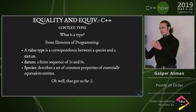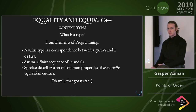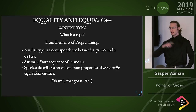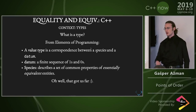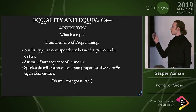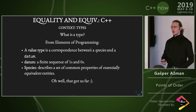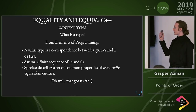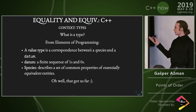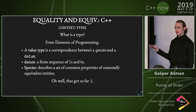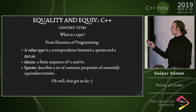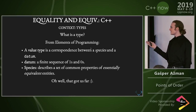So now we come to the C++ portion, and we're going to alternate a few more times. How does this relate to C++? Well, from Elements of Programming — thank you, Alex — a value type is a correspondence between a species and a datum.